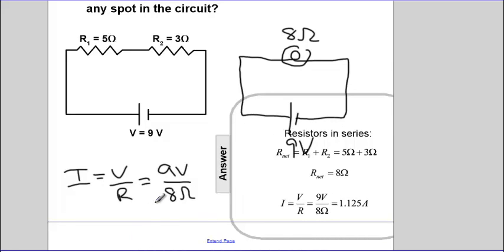And what this means is that the current anywhere is always going to be one point one two five amps. So the current there is one point one two five amps, the current there is the same value, one point one two five amps, and so on - the same, the same, and the same, because you only have one path.